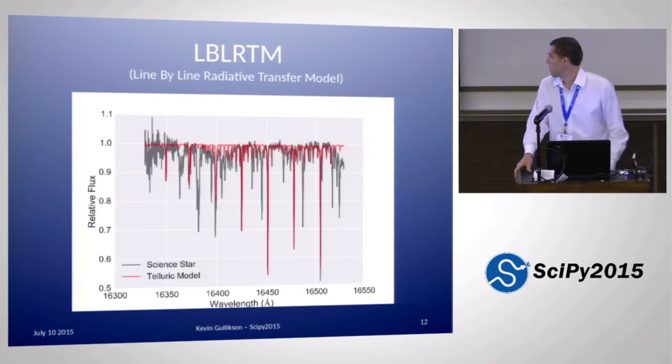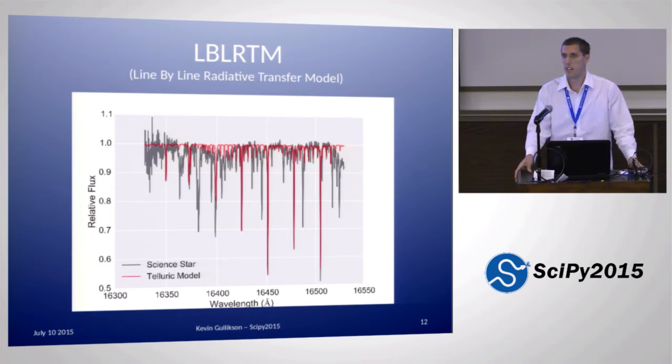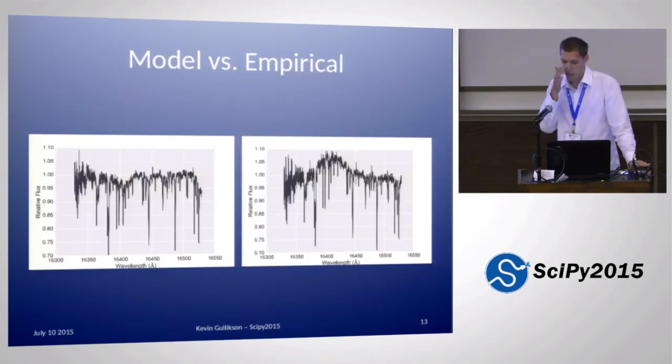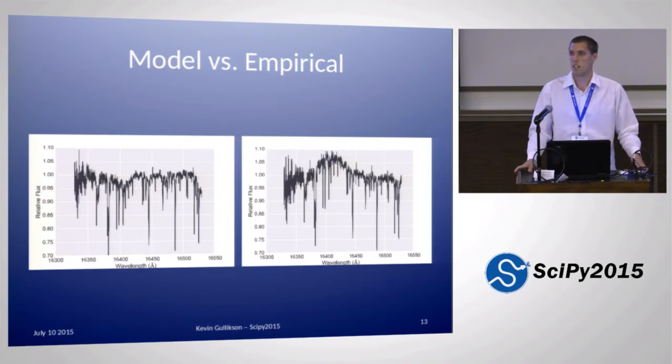There has sort of been a way around this for a while. This is the LBLRTM code, which stands for Line-by-Line Radiative Transfer Model. It's a FORTRAN code that knows about the Earth's atmosphere. You can tell it things about what the angle of your telescope is, where you are on Earth, and what elevation you're at. It'll calculate how much absorption there is from the Earth's atmosphere at each wavelength, which is exactly what you want. If you compare dividing by the telluric model to dividing by the empirical model, you have less noise, you don't have this division artifact, and you aren't using telescope time.